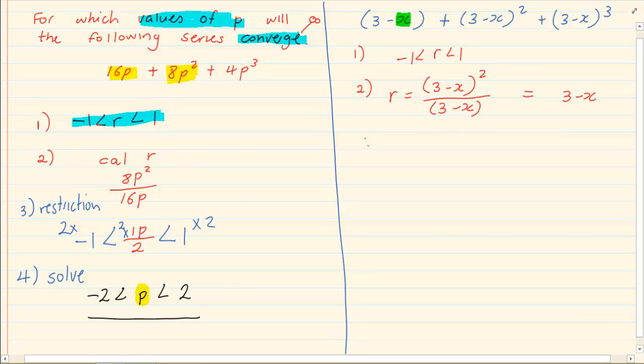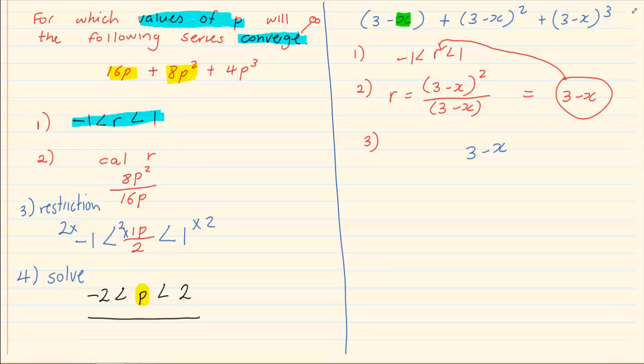Then you are going to put the r into the restriction. So what do we have now? We have 3 minus x. We are substituting it into the r. It is greater than minus 1 but smaller than 1.